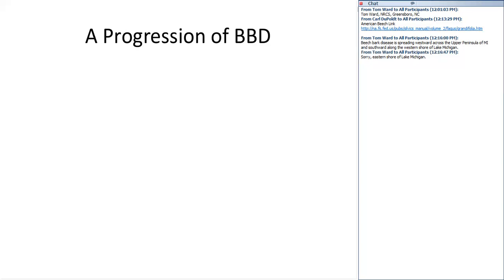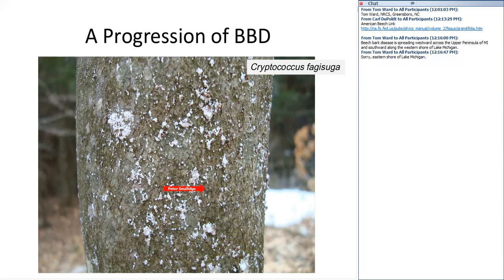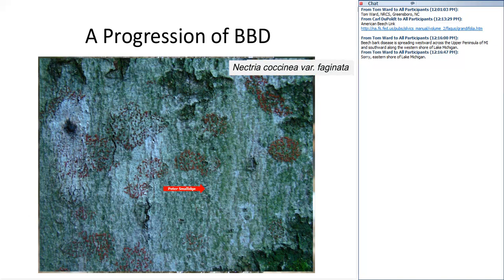Let's look at the progression of beech bark disease as it occurs in trees. First, you'd have an otherwise clean beech tree and you would see the scale insect exudates appearing on the bark. You wouldn't see the insects themselves, but you'd see patches of the exudate with no evidence of the fungus yet. Then the fungus will begin to develop — you'll see these are the perithecia, the fruiting bodies of the fungus. There are two species of Nectria; this is Nectria coccinea variety Faginata, thought to be weakly parasitic.